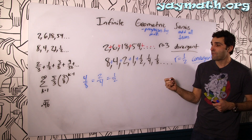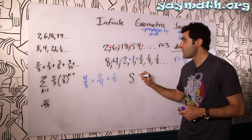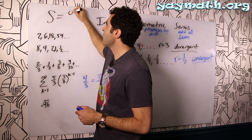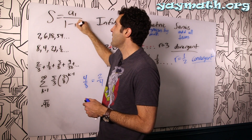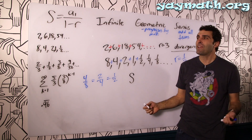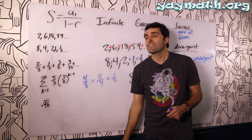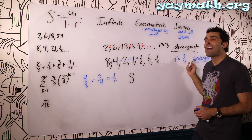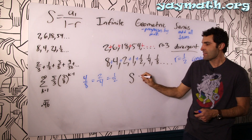Let's give you the formula. The sum equals the first term over one minus r. That's it — it's kind of amazing. First term over one minus r is the sum of all these terms added up to infinity, which is just crazy to me how simple it is.